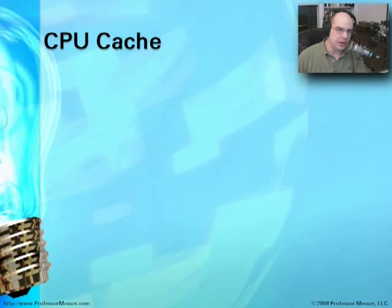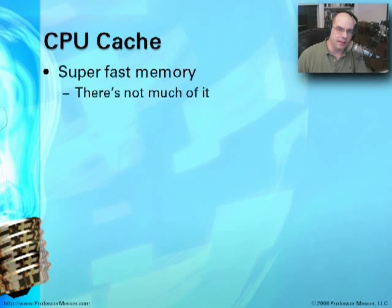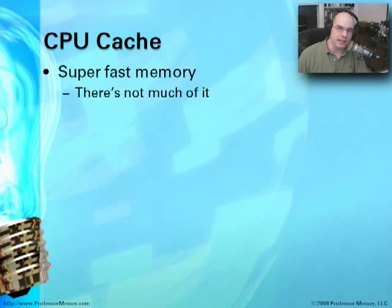Our introduction to CPU video talked a lot about the structure and architecture of cache memory. Cache memory itself is very, very fast memory, and because it's so fast, it's also very expensive, so there's not a lot of it on a CPU. These days, though, we're able to use memory in different ways and those caches are getting larger, especially the L1 and L2 caches.